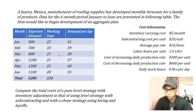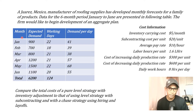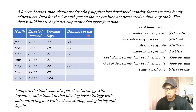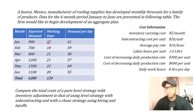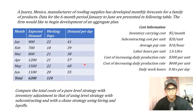They've given us some additional information besides the table. The table basically contains the monthly demand forecast and the number of working days in each month. The demand per day is simply the expected demand divided by the number of working days, rounded up to the nearest whole number. The total demand over the next six months is 6,200 units and we have a total of 124 working days.